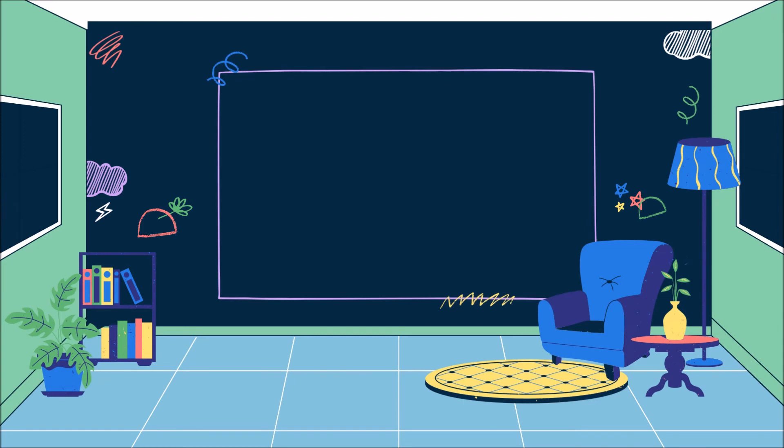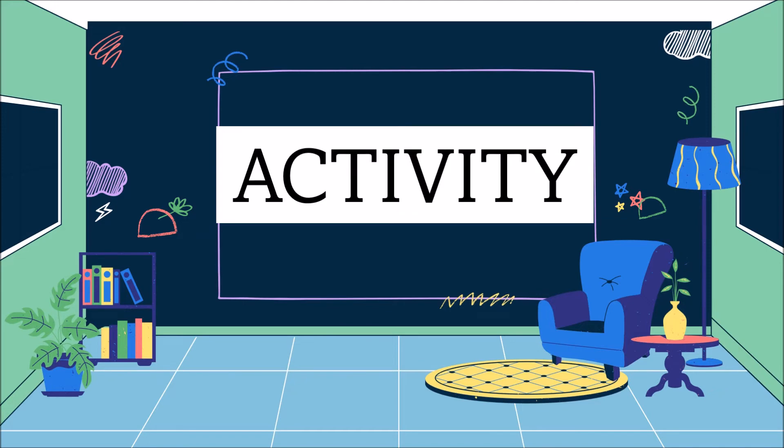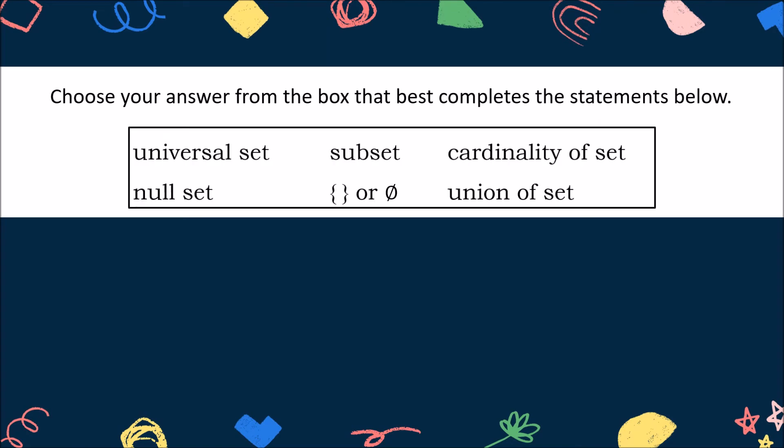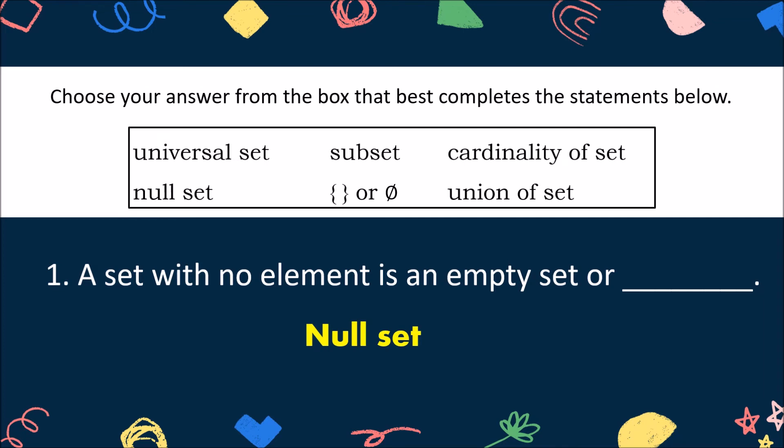We are done with our lesson. I guess you are now ready to answer our activity. You can write your answer in a piece of paper. Let's have our first activity. Choose your answer from the box that best completes the statements below. Number 1. A set with no element is an empty set or blank. Good job! The correct answer is null set.